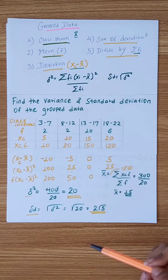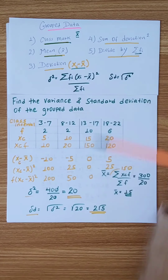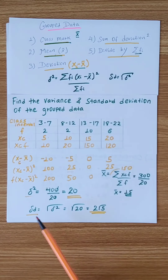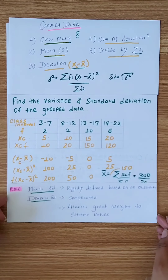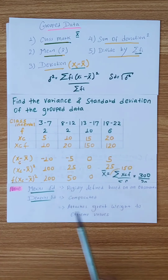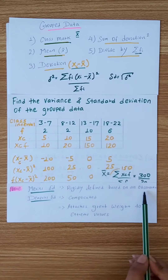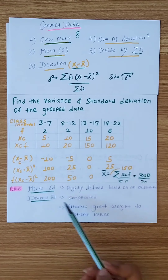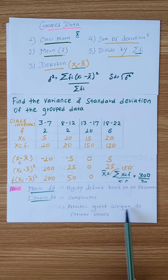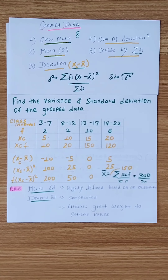The standard deviation is equal to the square root of the variance. This is the standard deviation and the whole equation for the grouped data calculation. Thank you.